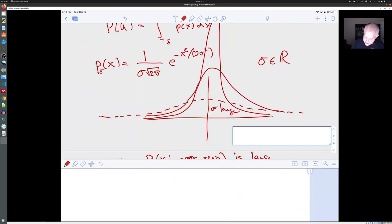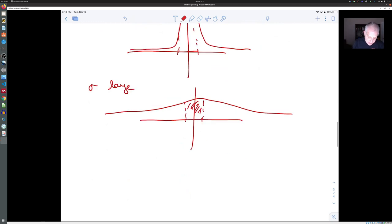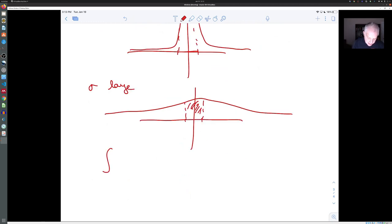And the reason for this one over sigma square root of two pi in the front is to make sure that the axiom is satisfied that P of X is one, P of R, which is the integral from minus infinity to infinity of P of X DX is actually equal to one. And that's where that normalizing constant comes from.